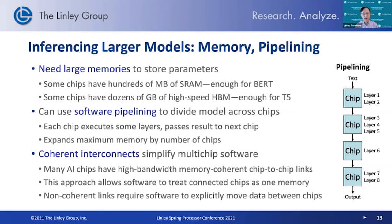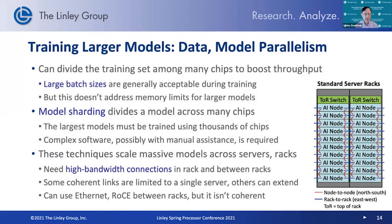We're seeing many chips now targeting larger models and implementing some kind of high-speed coherent interconnect. NVIDIA has NVLink, and most other companies have created their own similar links. To train these large models, you face similar problems, but as models get bigger you have to execute very large training datasets. One technique is to divide the training set among many chips — you're typically training on millions or billions of sample data items, so you divide those across hundreds or thousands of chips, creating data parallelism that allows you to more quickly train the model. On the training side, you can usually use large batches of data at a time, and that can scale well across all these chips.